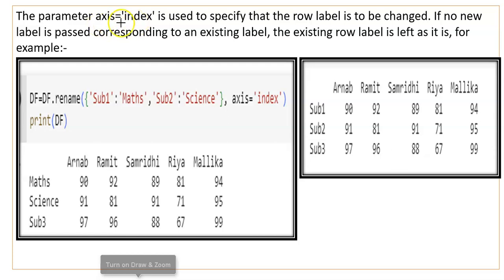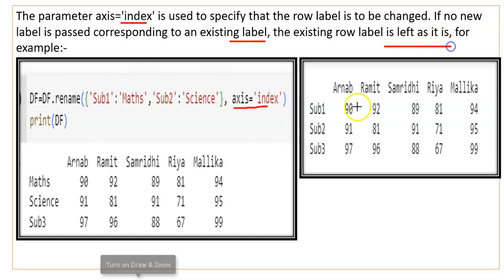The parameter axis equals to 'index' in the rename function specifies that the row labels are to be changed. The 'index' value tells the function to change row labels. If no new label is passed corresponding to an existing label, the existing row label is left as it is — it will remain unchanged.